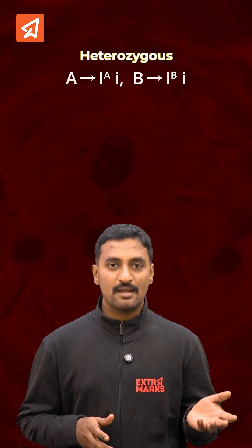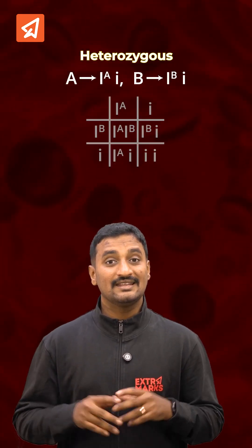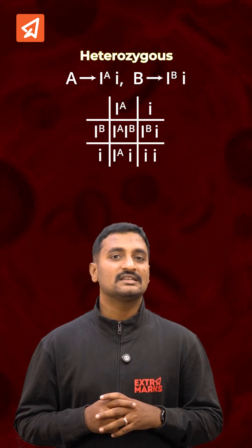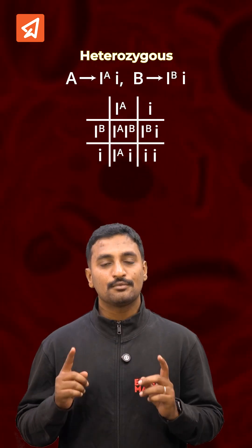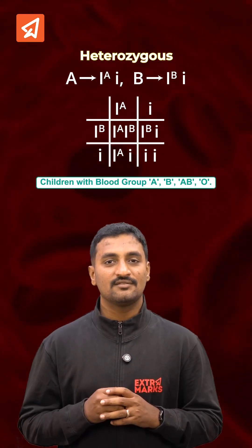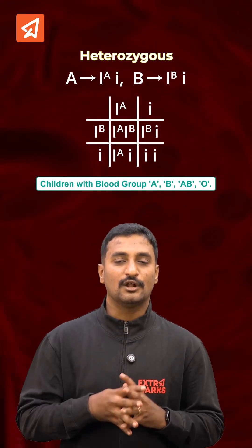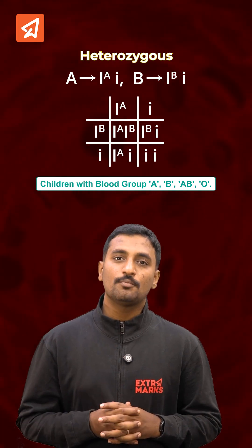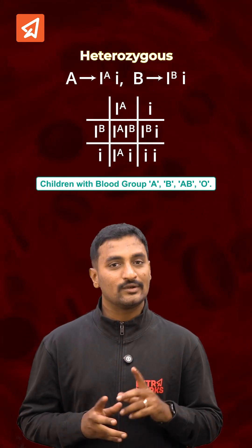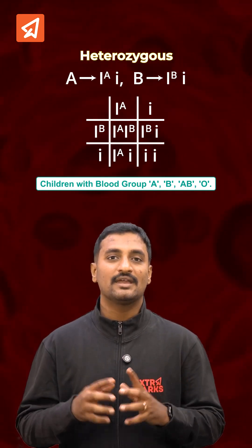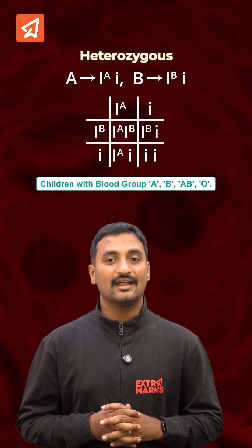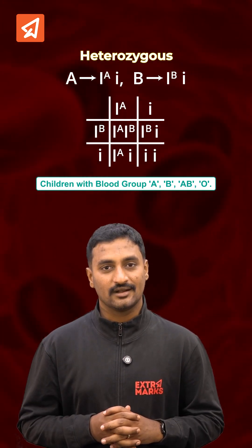If both parents are in a heterozygous condition with blood group A and blood group B, in this particular scenario they can produce children with all four types of blood groups. Blood group O is possible only when both parents are in a heterozygous condition.